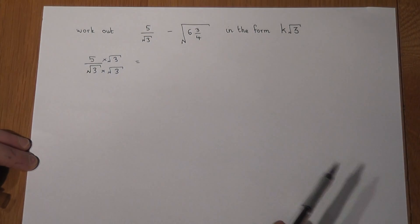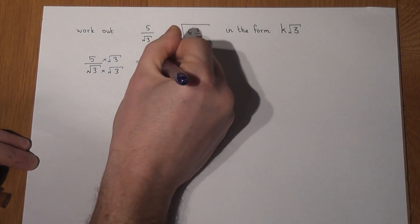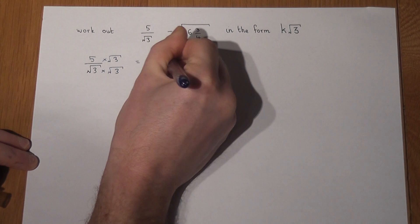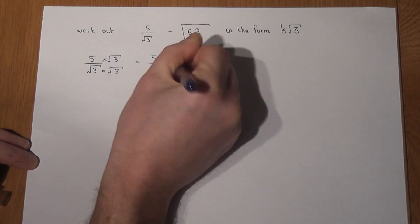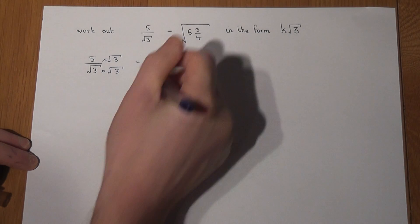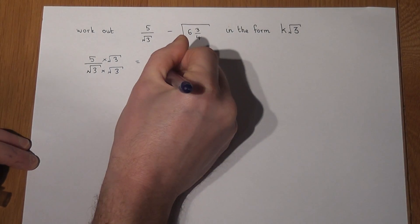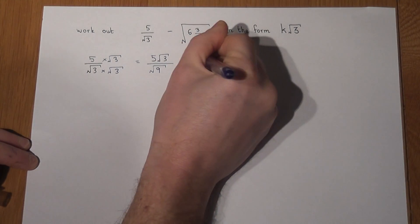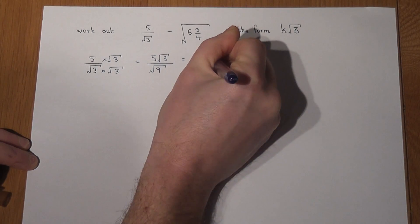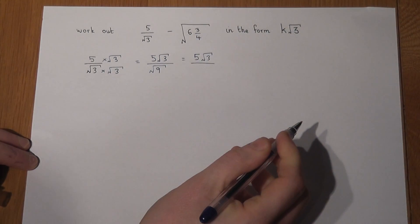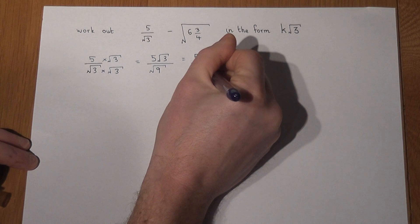Now 5 lots of root 3 we know is just 5 root 3. However root 3 times root 3 is the same as the square root of 9, and the point now is that I can actually find what the square root of 9 is, it just equals 3.